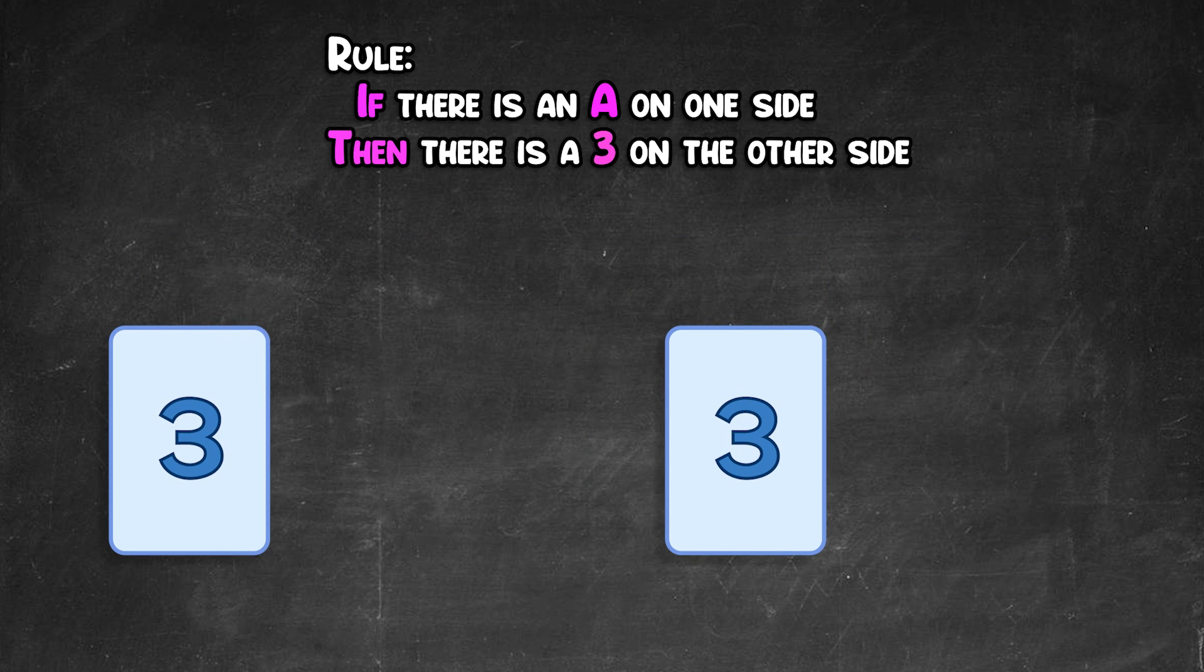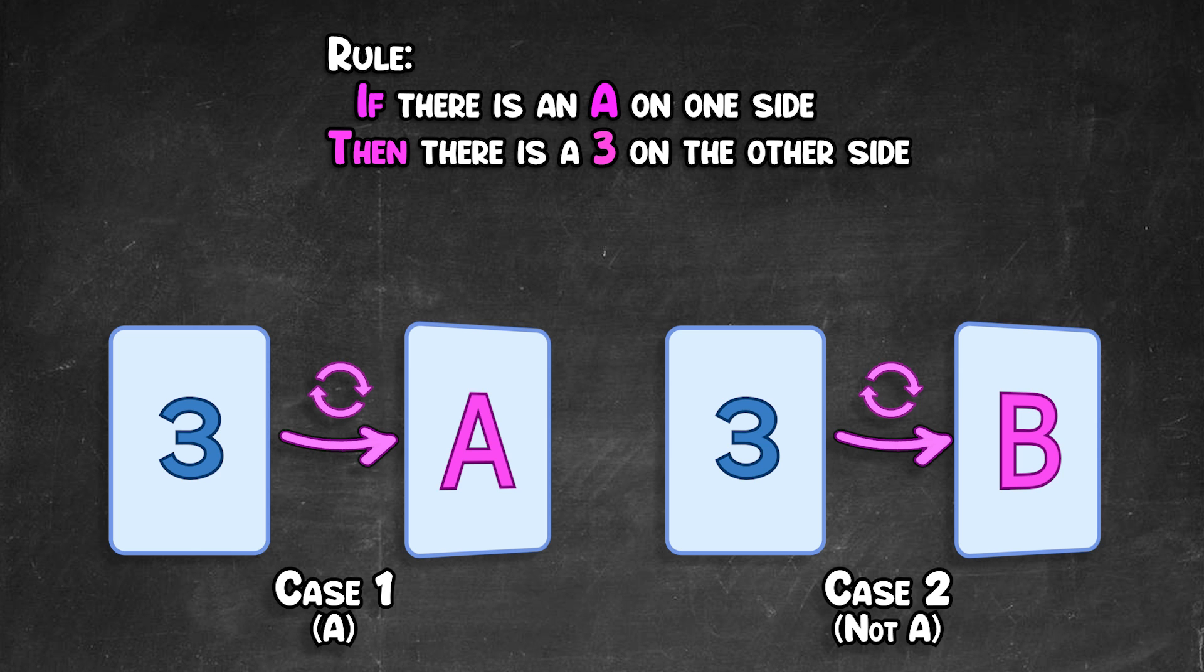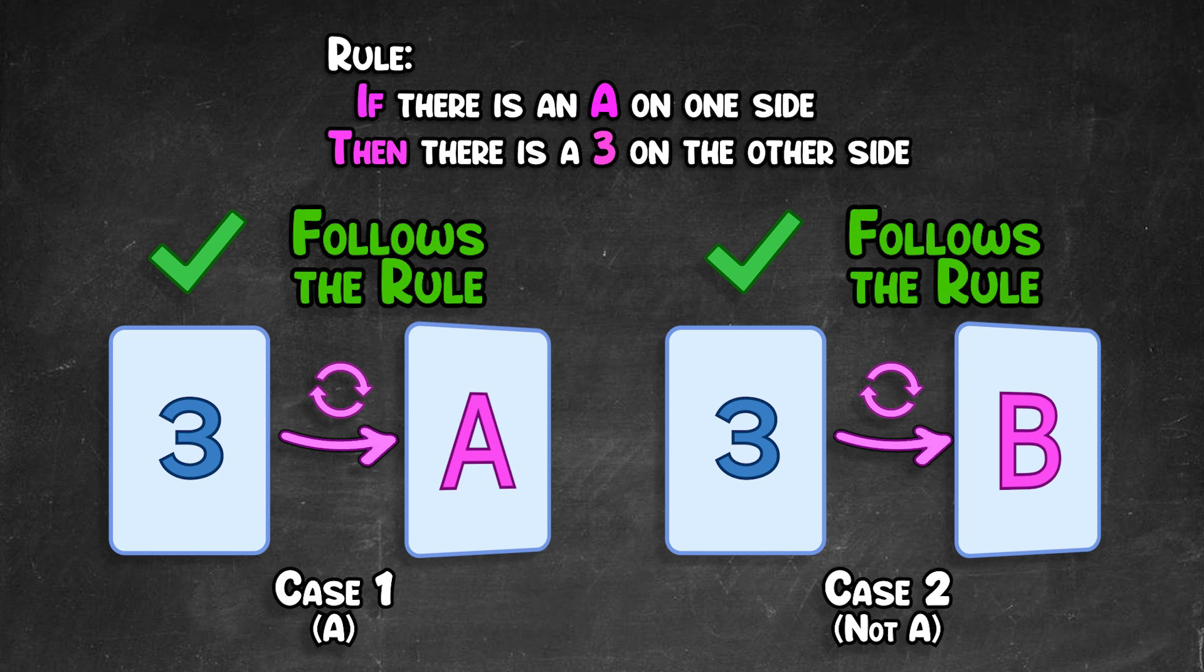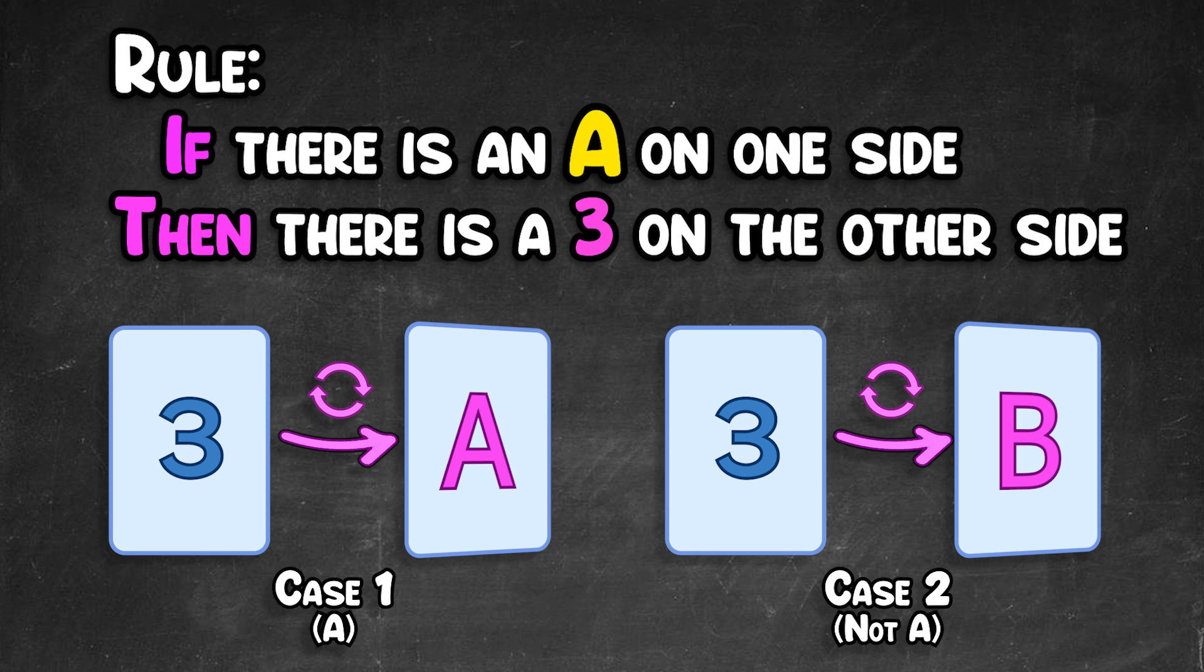It actually is unnecessary to flip the 3 card. Why? Well, it actually doesn't matter what's on the other side. You see, it can't break the rule no matter what is on the back. The rule was an A must have a 3 on the other side, not that a 3 must have an A on the other side.